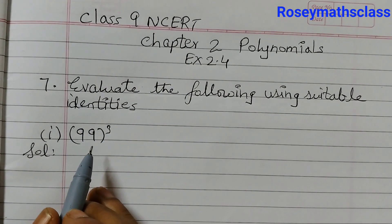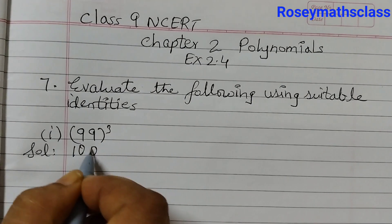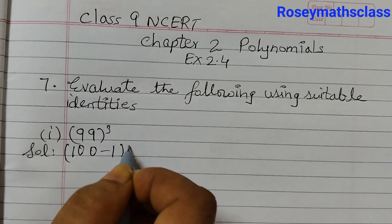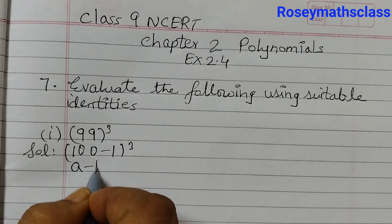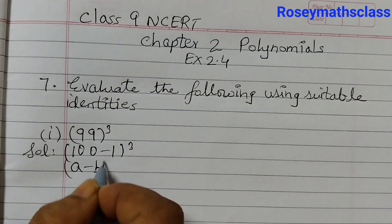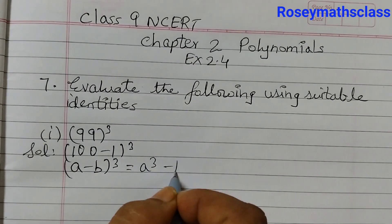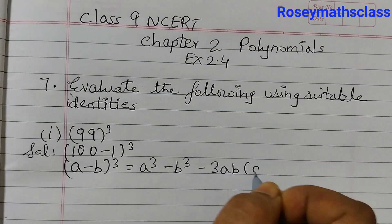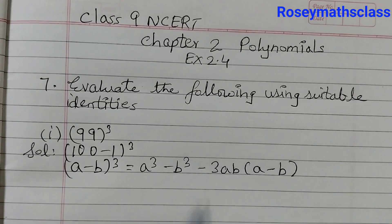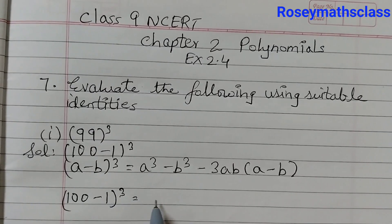The first one is 99 cubed. 99 can be written as (100 - 1) cubed. The identity that we will use is (A - B)³ = A³ - B³ - 3AB(A - B). Here A is 100 and B is 1.